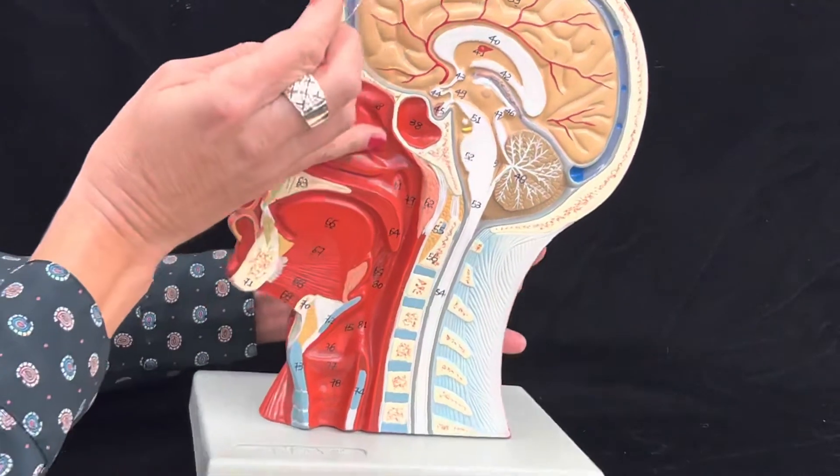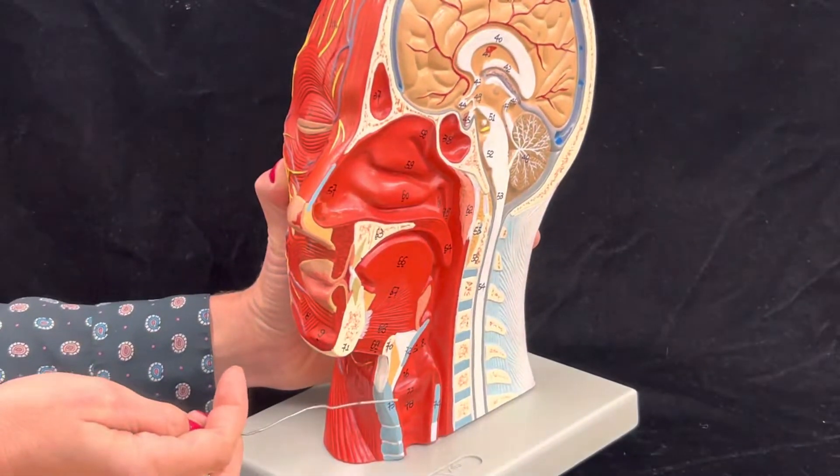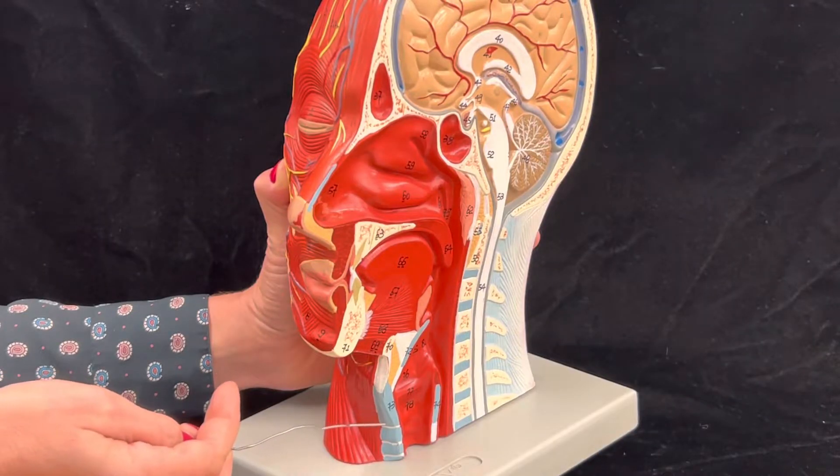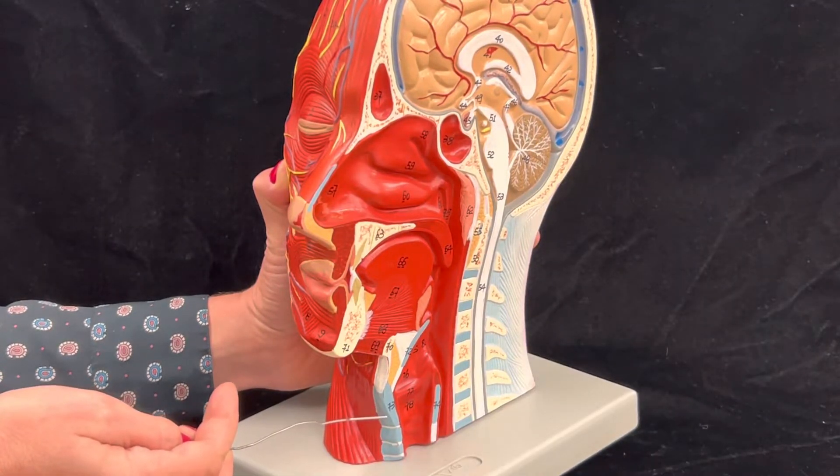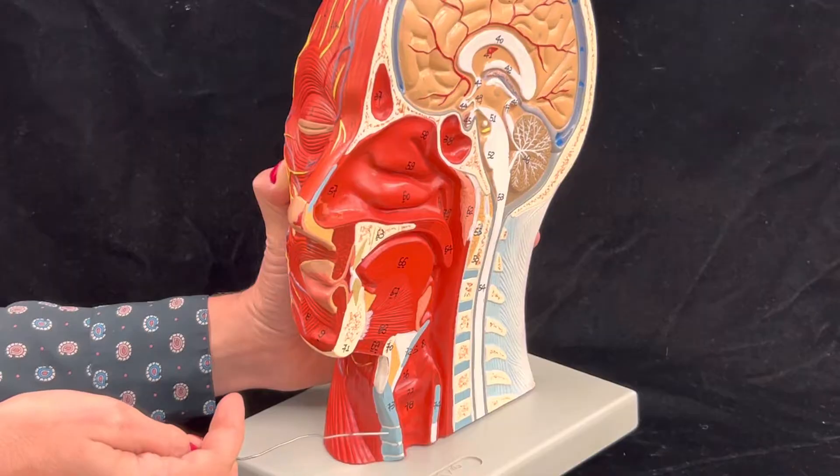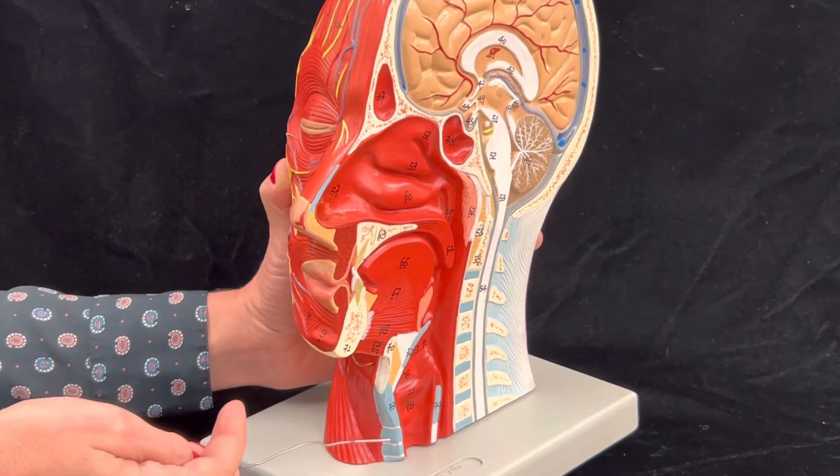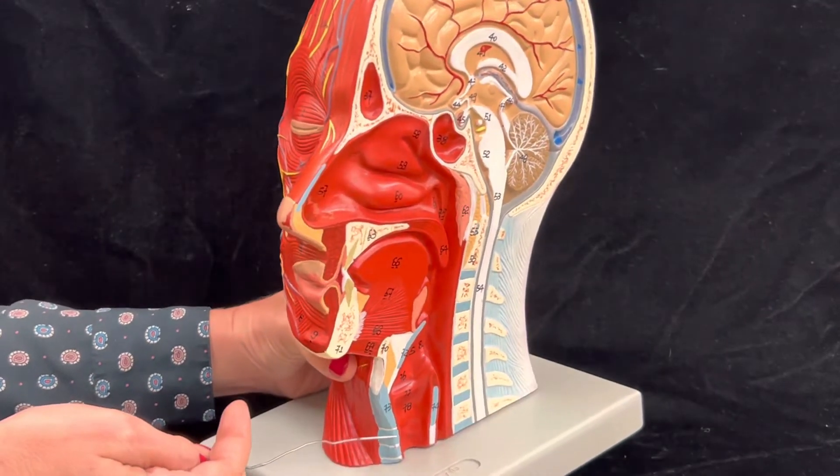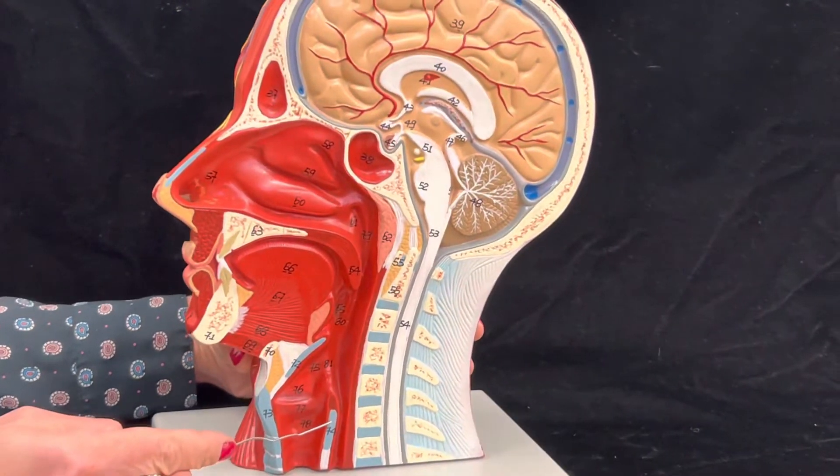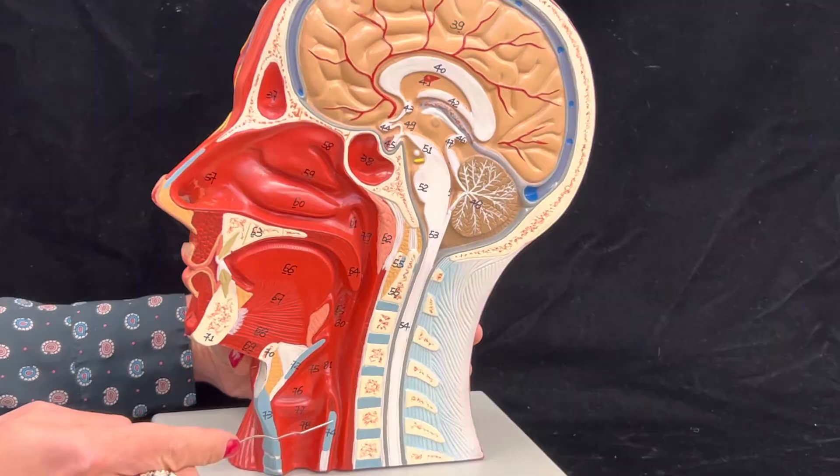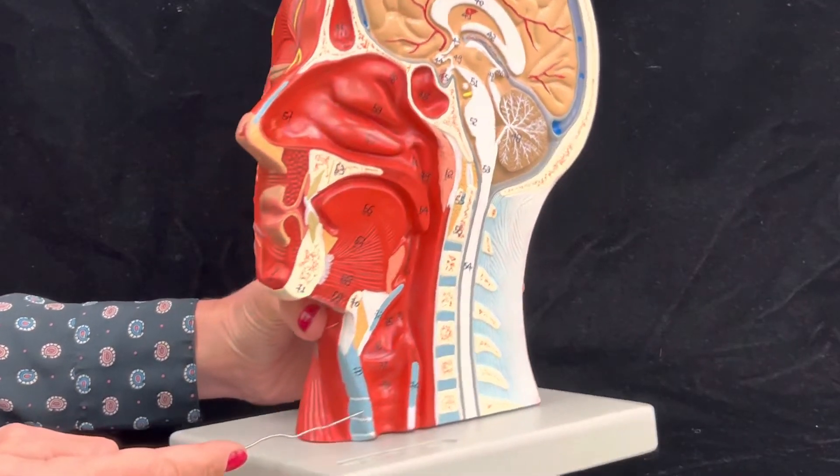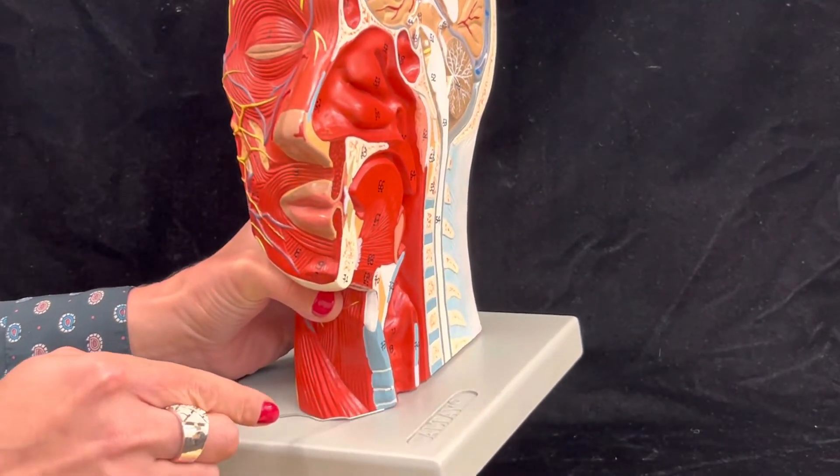The largest cartilage we have in the larynx is the thyroid cartilage. Right underneath the thyroid cartilage, we have the cricoid cartilage, and the cricoid cartilage is the only one that has the posterior aspect. Underneath the cricoid cartilage, we have the trachea.